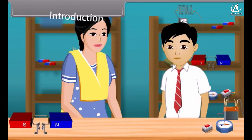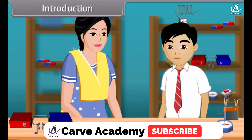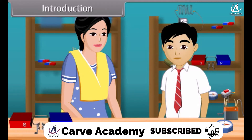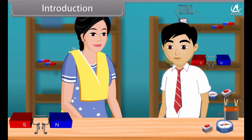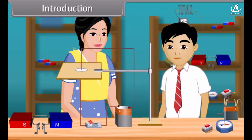Today, our physics teacher is going to perform an experiment in the physics lab. She starts the experiment in front of the students. She took a cardboard having a hole at the center. She made an electronic circuit and passed the wire from that hole. Then, she sprinkles the iron dust on the cardboard uniformly.